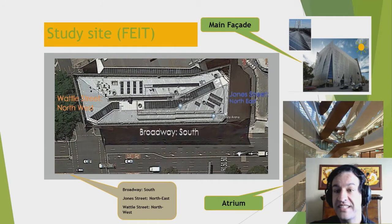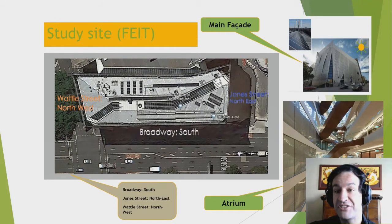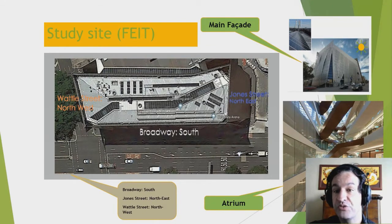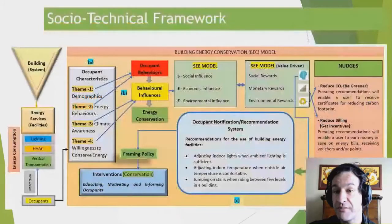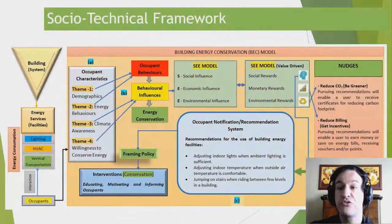The building used for our business case is the Faculty of Engineering and Information Technology at the University of Technology Sydney, UTS. To simplify the situation, we only simulate one floor of that building — floor seven. Let's review the sociotechnical framework we built to frame the problem in a more structured way, which will also help you understand the problem better.